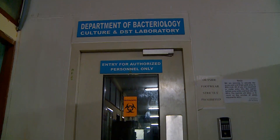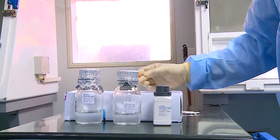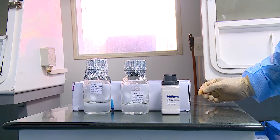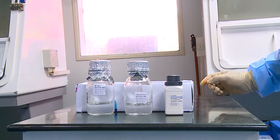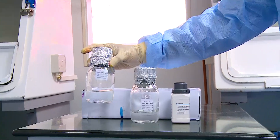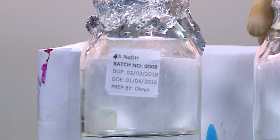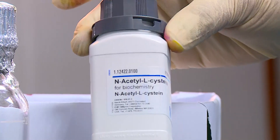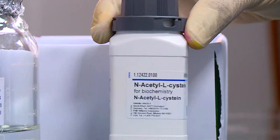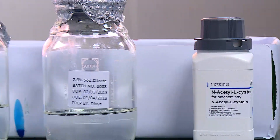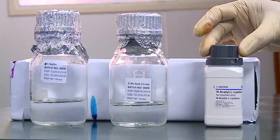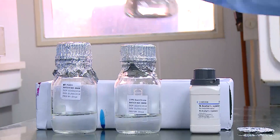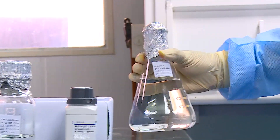We will now look at the procedure. These are the reagents and the powder used for the process. First is 4 percent sodium hydroxide. Second is 2.9 percent sodium citrate and N-acetyl-L-cysteine powder. It is preferable to use this powder freshly every day, which can be packed in a small packet and brought to the laboratory. We also have phosphate buffered saline at pH 6.8.